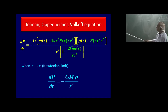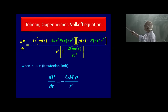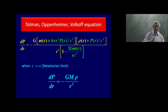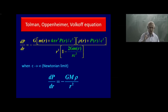The equation shown is known as the Tolman–Oppenheimer–Volkoff equation — the correct equation of hydrostatic equilibrium to use in general relativity, provided you are dealing with spherical, non-rotating masses.